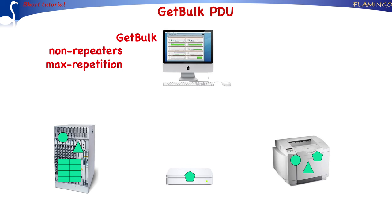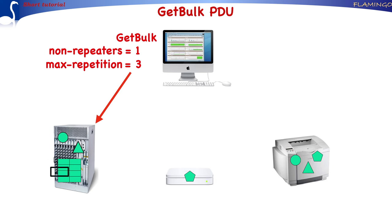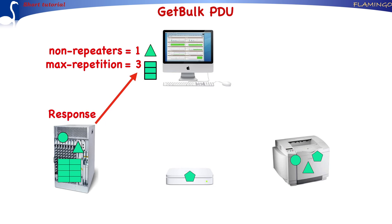Assume that the request includes two VARBINDs and the value for non-repeaters is 1 and max-repetitions is 3. After the request is received by the agent, the agent determines the value of the object that lexicographically follows the non-repeaters VARBIND, as well as the three values following the max-repetitions VARBIND. These values are then returned to the manager as part of the response PDU. In practice, non-repeaters is often used to retrieve the value of sysUpTime, whereas max-repetitions is used to retrieve a series of table elements.